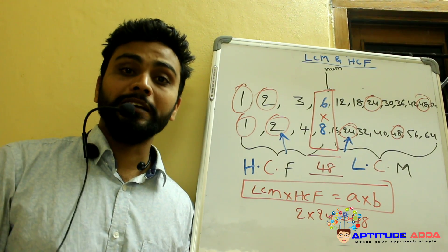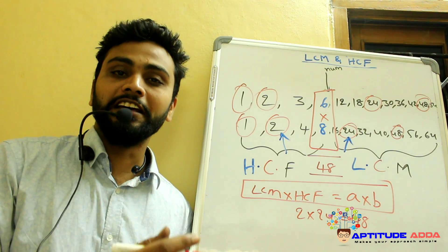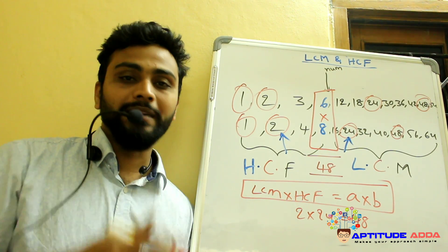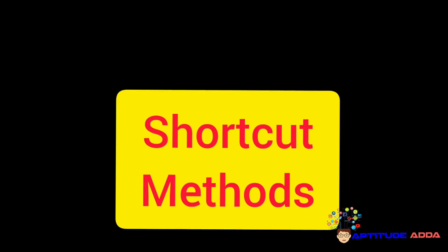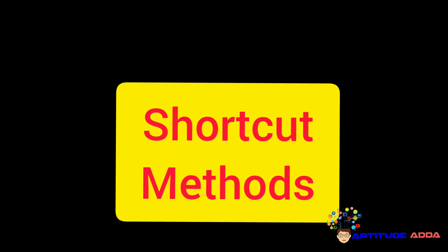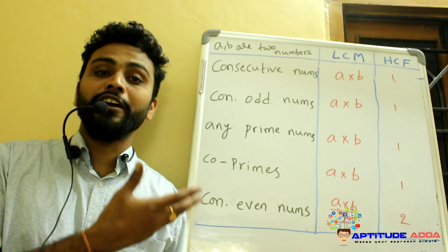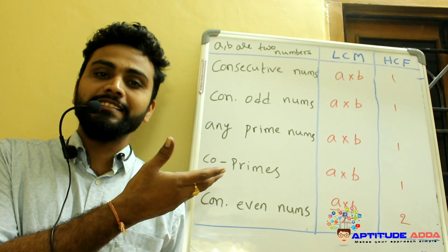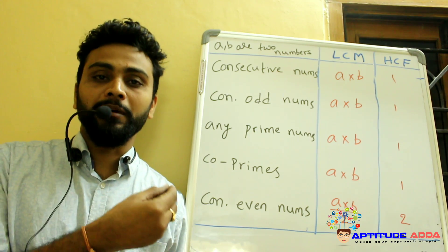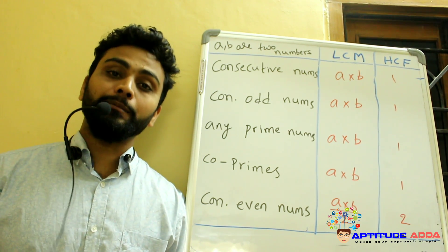This formula is applicable for only two numbers. If there are three numbers, this formula will not be applicable. By using this table, we are going to find out LCMs without using pen and paper. Please take a screenshot of this table.